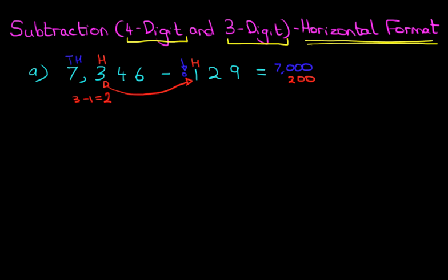Let's keep going. We've now got the tens. For the tens, we have 4 minus 2. 4 minus 2 is 2. There are two tens.